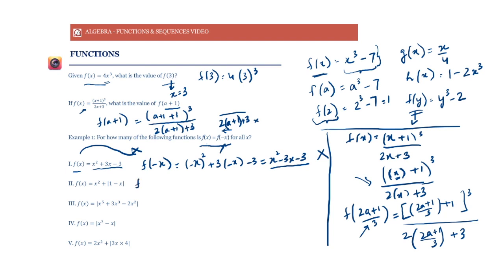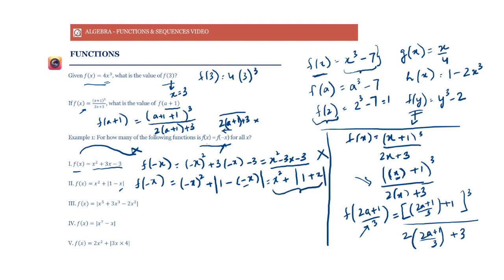Let's check f(−x) for the next function. f(−x) gives (−x)² plus the absolute value of (1 − x). This becomes x² + |1 − x|. Is this equal to x² + |1 + x|? No, it isn't. Here we have |1 − x|, whereas the original has |1 + x|. So again, they are not equal.